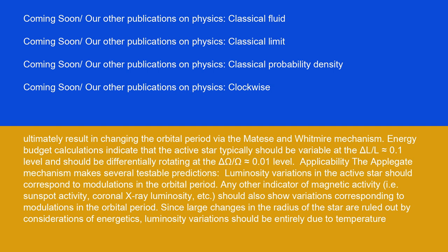Applicability: The Applegate mechanism makes several testable predictions. Luminosity variations in the active star should correspond to modulations in the orbital period.